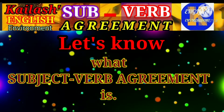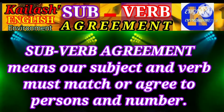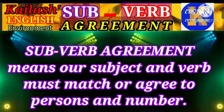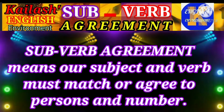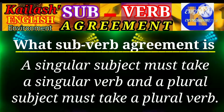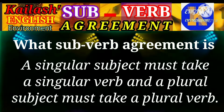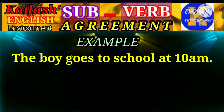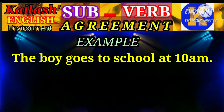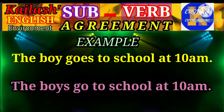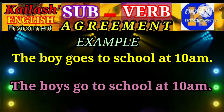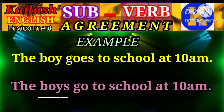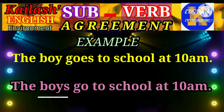Let's know what subject-verb agreement is. Subject-verb agreement means our subject and verb must match or agree in person and number. A singular subject must take a singular verb, and a plural subject must take a plural verb. For example, 'The boy goes to school at 10 am.' 'The boys go to school at 10 am.' Here, 'the boy' is singular, so it takes the verb 'goes.' But 'the boys' is plural, so the verb is plural: 'go.'